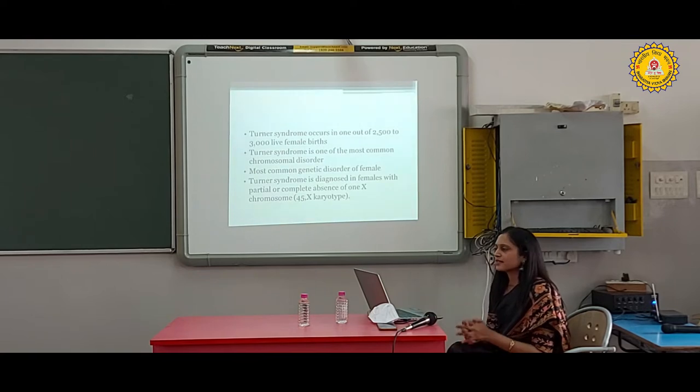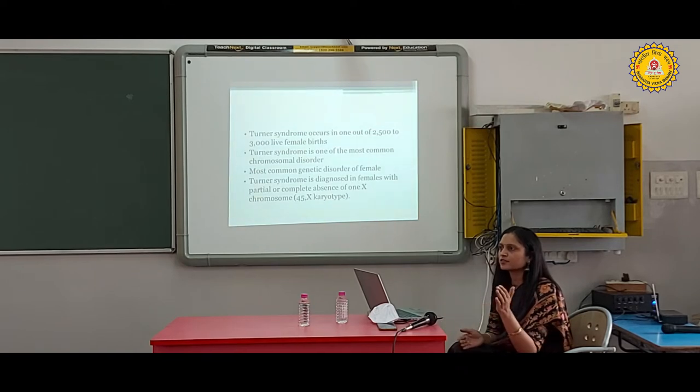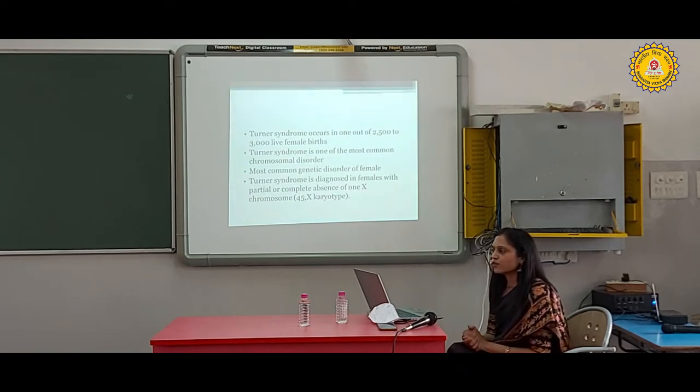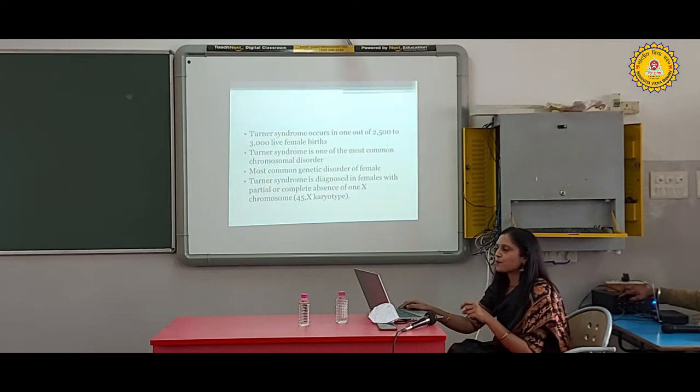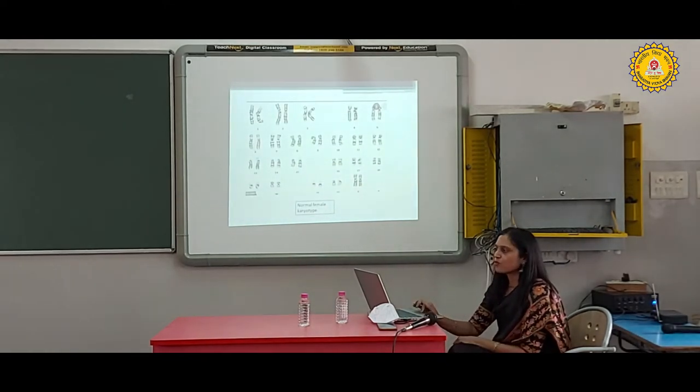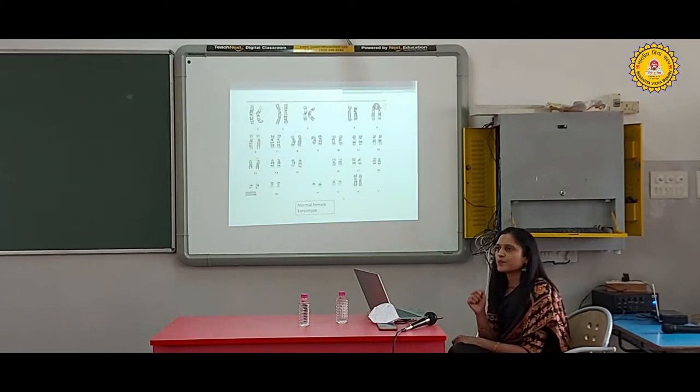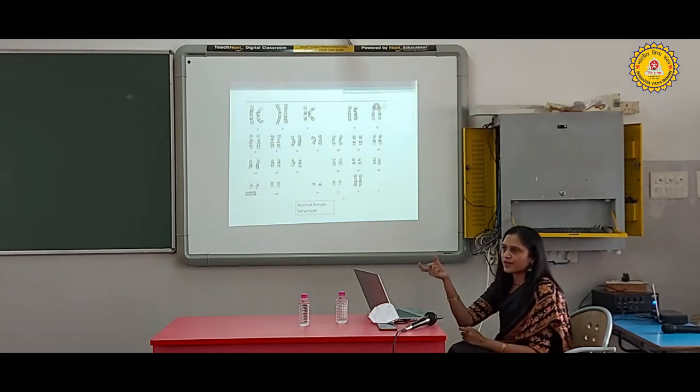Turner syndrome is a good topic to discuss because these are female children with normal intelligence. We need to identify each Turner syndrome child among the normal population. Turner syndrome occurs in one out of 2,500 to 3,000 live-born female children and is one of the most common chromosomal disorders and the most common genetic disorder of females.